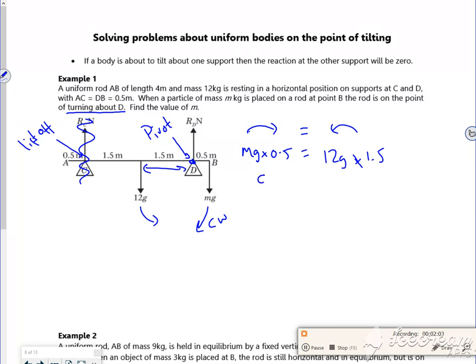I've got 0.5m equals 18, so m is going to be 36 kilos. That's not too bad, is it?